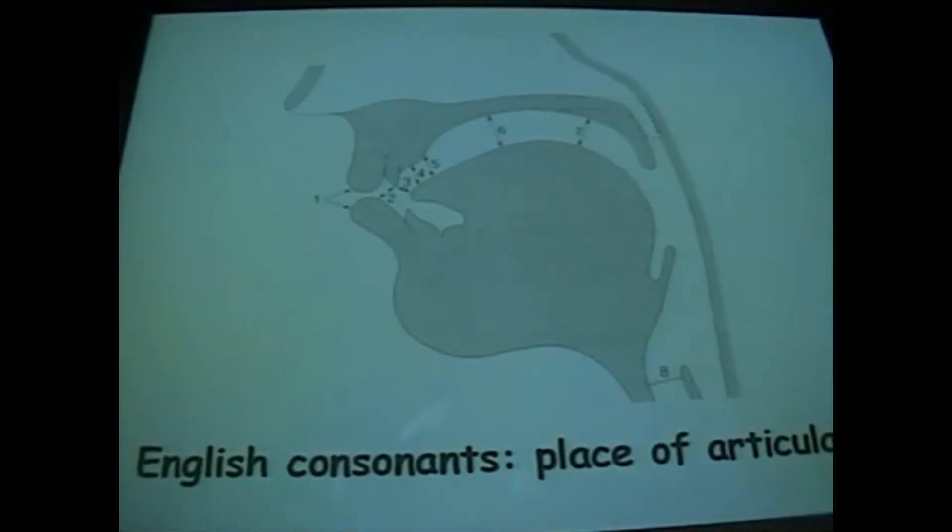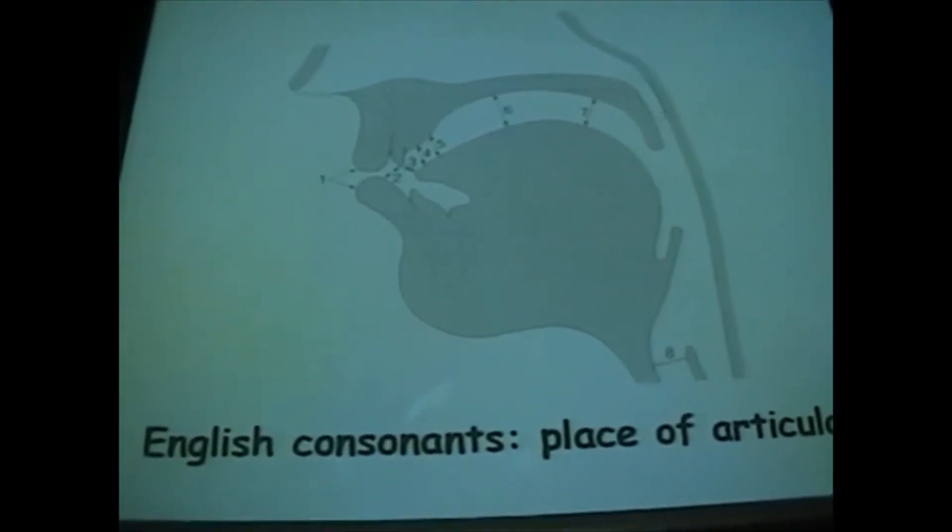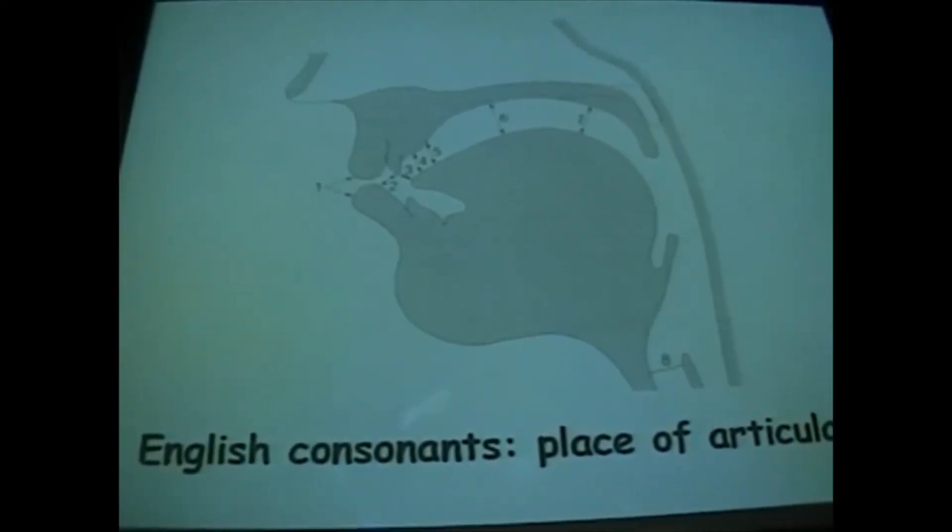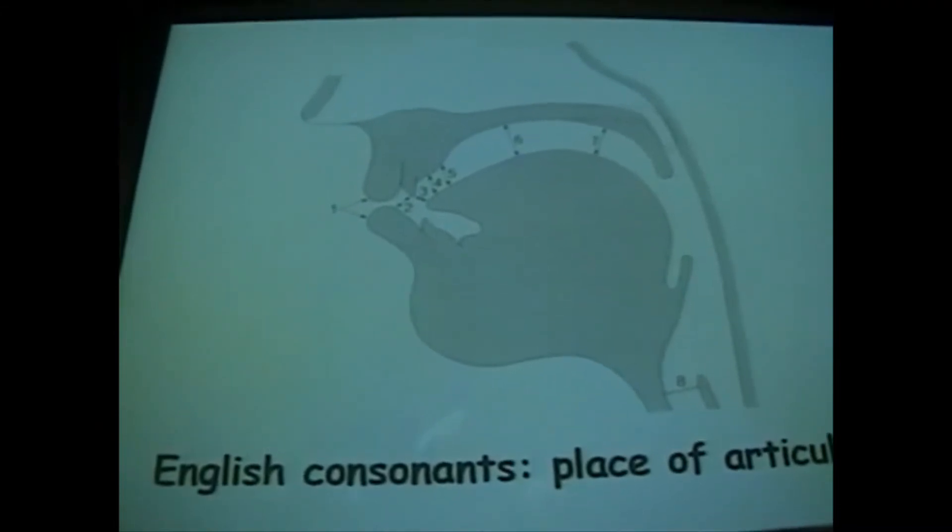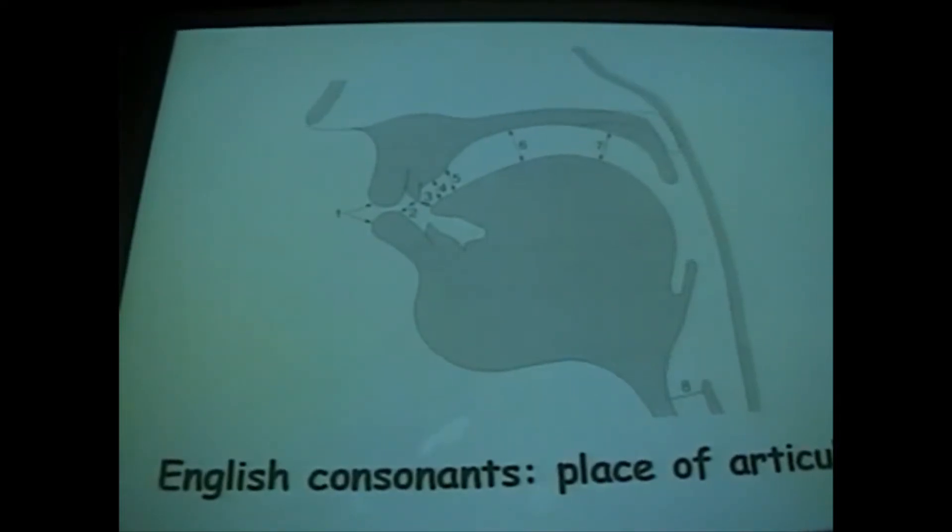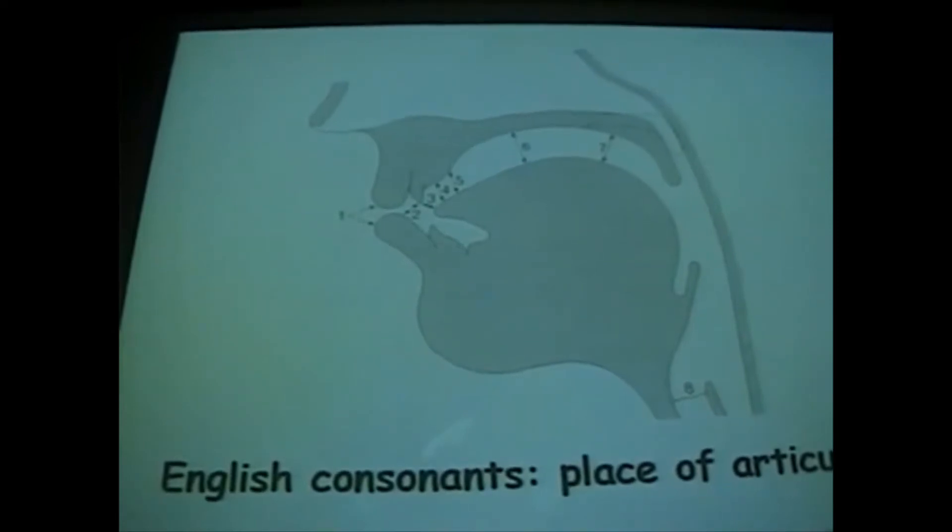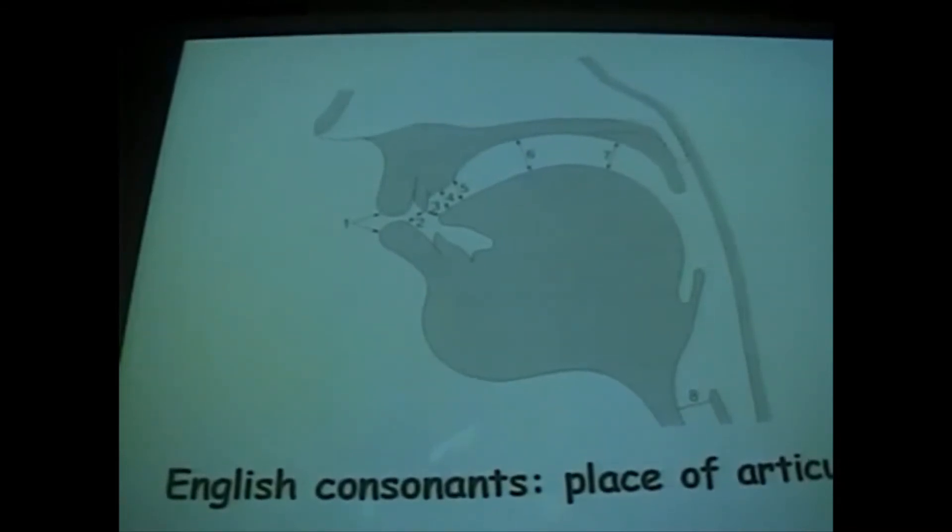R is a rather funny one, because it's termed post-alveolar. Post means after, it's Latin for after, but in phonetic description, if you say post, you mean towards the back of the mouth. If you say pre, then you mean towards the front of the mouth. And the other thing about R, English R, has a whole lot of complicated things going on about it. And the label, at least for many people's articulation of R, including my own, is rather inadequate just to call it post-alveolar. But more of that again next Monday.